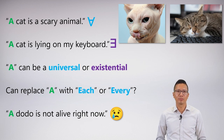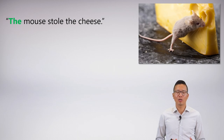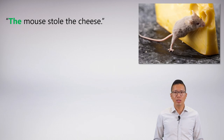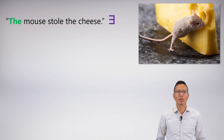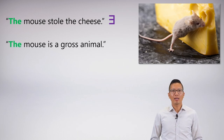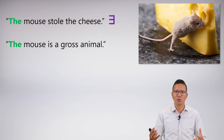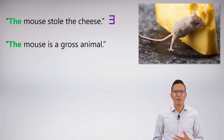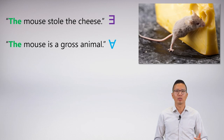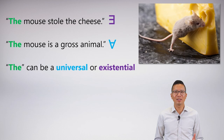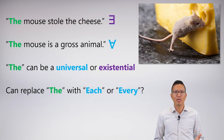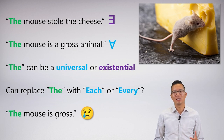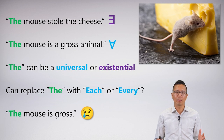The word 'the', the definite descriptor word, is also problematic in this way. 'The mouse stole the cheese' seems to invoke a singular mouse — that's an existential claim. But 'the mouse is a gross animal' is actually talking about the mouse as a universal property or group, similar to 'a cat is a scary animal.' So 'the mouse is a gross animal' is a universal. The word 'the' can be a universal or existential, and the replacement test — can you replace 'the' with 'each' or 'every' — isn't always satisfying. 'The mouse is gross' is actually unclear whether it's existential or universal.